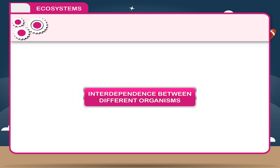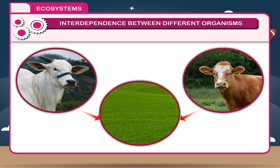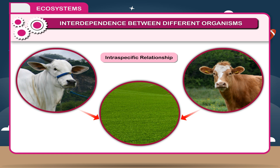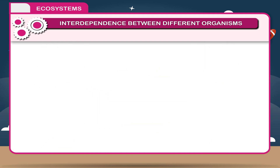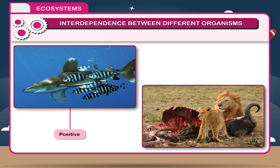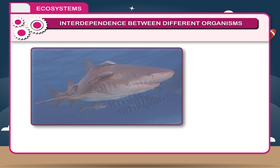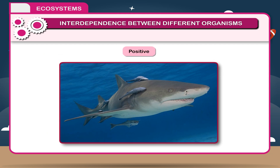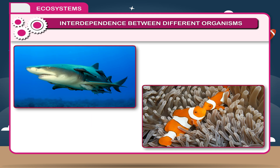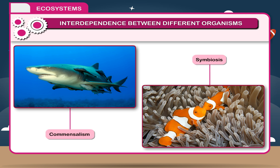Interdependence between different organisms. Relations between organisms of the same species is called intraspecific relationship. When two or more different species depend on each other, it is called interspecific relationship. Interspecific relationships may be positive or negative. When one species helps another or when one or both species are benefited, the interaction is called positive. For example, commensalism and symbiosis are examples of positive interactions.